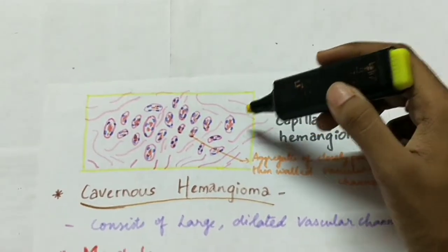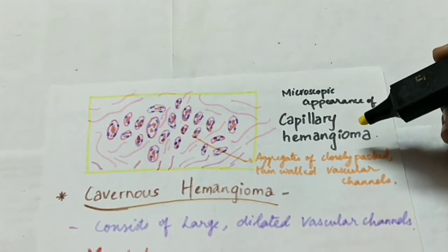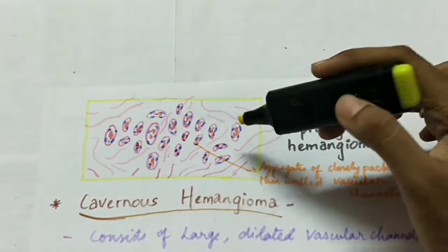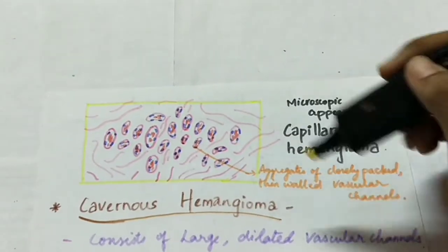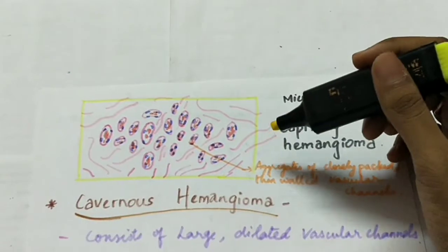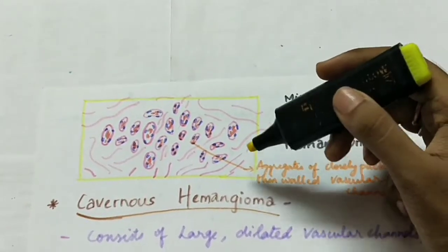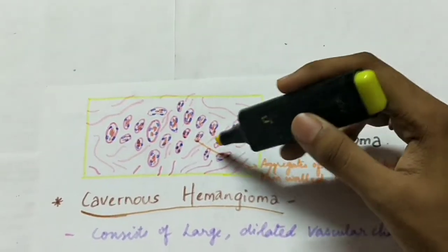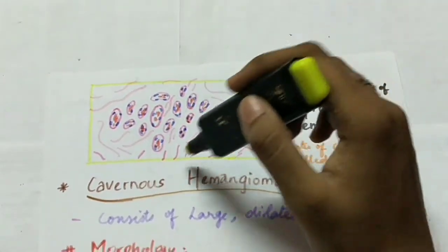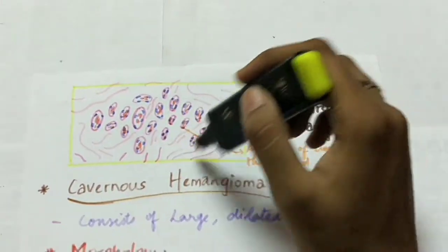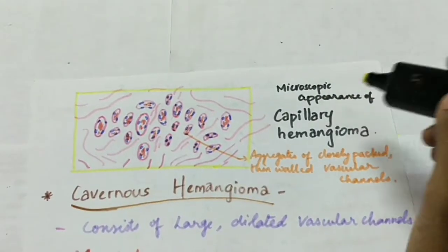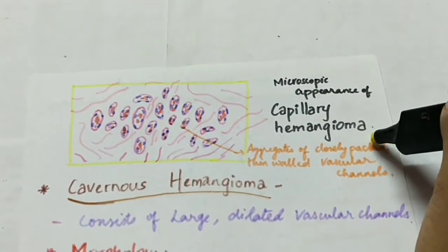This is the microscopic appearance of capillary hemangioma, consisting of aggregates of closely packed thin-walled vascular channels lined by flattened endothelium, with the lumen usually filled with blood, and vessels separated by scant connective tissue stroma.